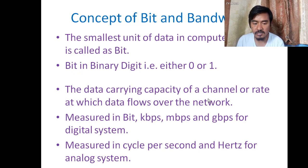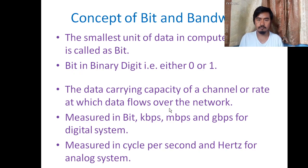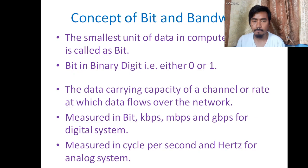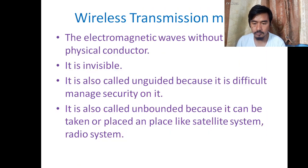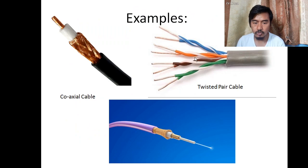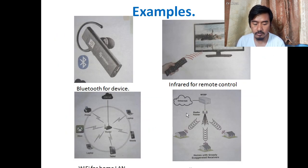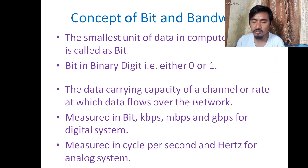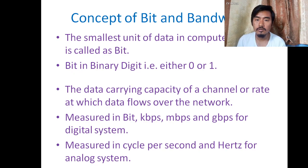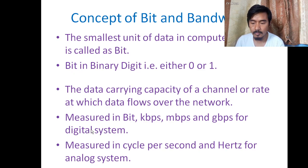Bandwidth is the data-carrying capacity of a channel, or the rate at which data flows over the network. Different transmission media — such as fiber optic cable, Bluetooth, or other wired connections — have different capacities for transferring data. That capacity is known as bandwidth.